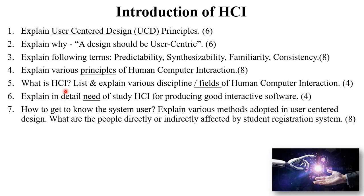The next question is: what is HCI? List and explain various disciplines and fields of human-computer interaction for 4 marks. You have to mention the definition of HCI and all the fields with examples. The next question is: explain in detail the need to study HCI for producing good interactive software for 4 marks, explaining all needs point-wise with examples.